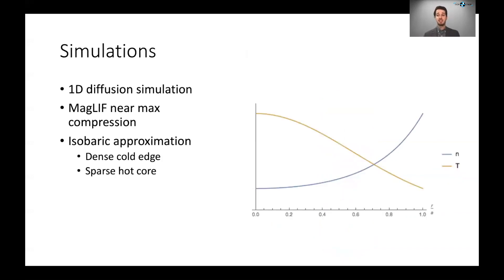So in order to see the effect that this could have on a fusion reaction, we did a 1D diffusion simulation just with a simple model of a MagLIF reaction near the point of maximal compression when it's most magnetized. And because these compressions are subsonic, you can approximate the plasma as being isobaric, having constant pressure. So because of that, and because we have a hot spot in the middle, you're going to have a dense cold edge out here, and your hot spot will be a little sparser, but it'll be the hot core where most of the fusion is occurring.